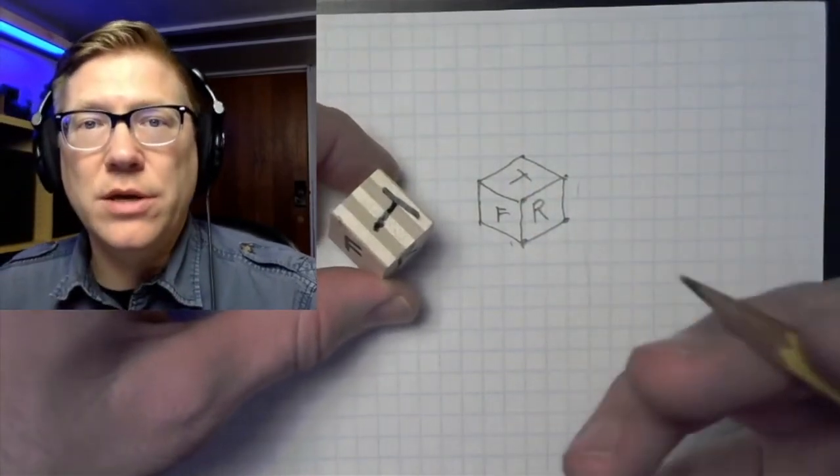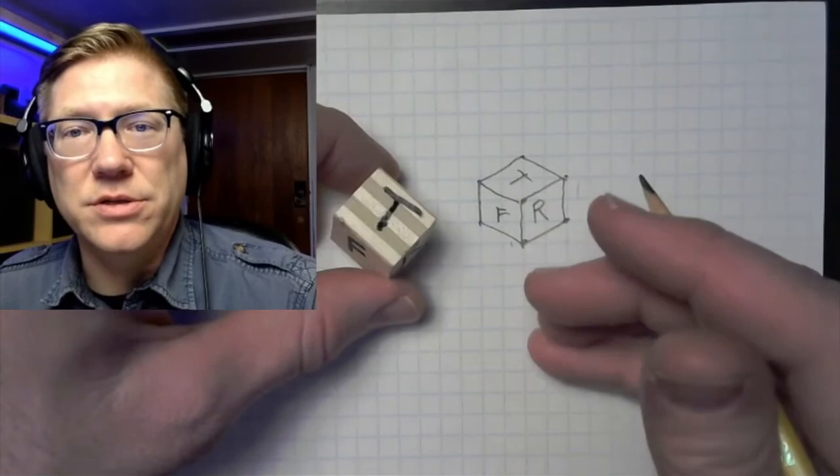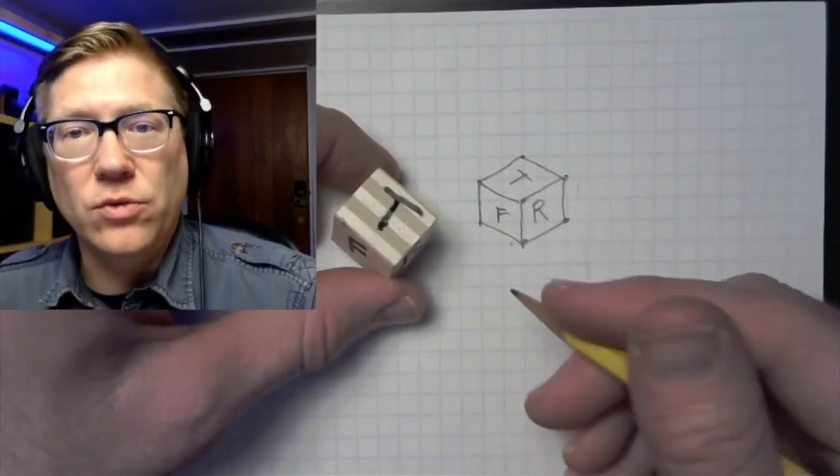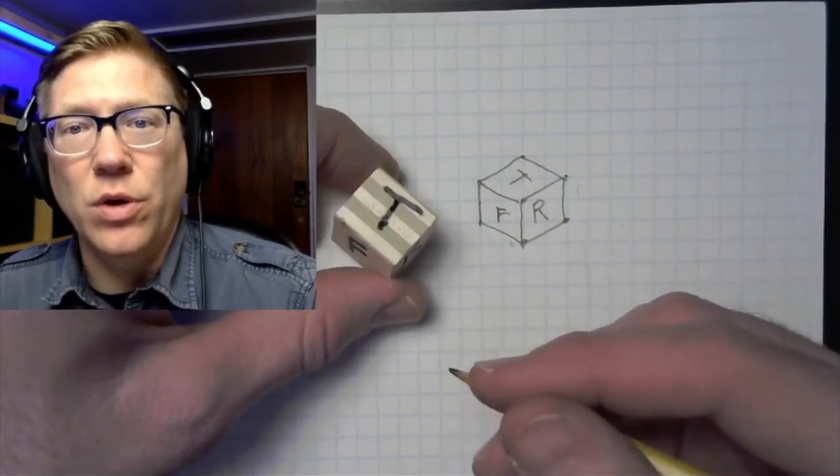So that's how we can do a pretty good isometric drawing using standard graph paper. Again, once you get used to doing the technique, start using a ruler because it will really improve the quality of your lines.